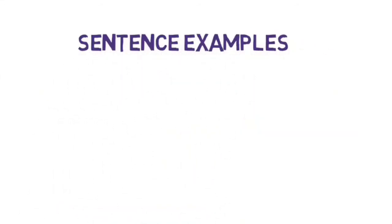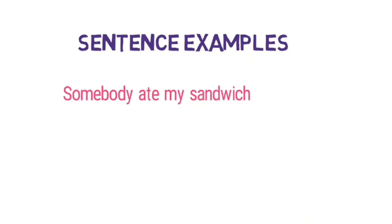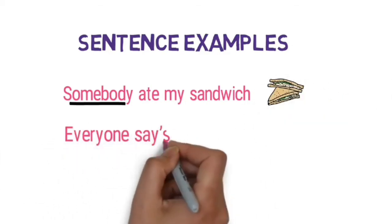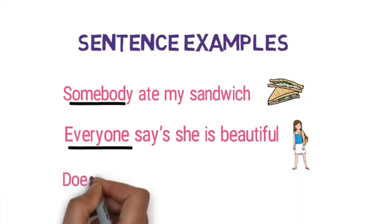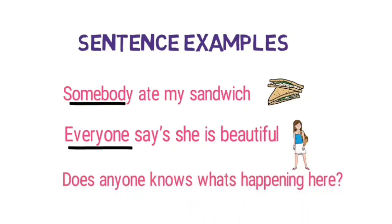Let's look at some sentence examples. Somebody ate my sandwich. Here, 'somebody' is an indefinite pronoun because we do not know who exactly has eaten the sandwich. Or: Everyone says she's beautiful — 'everyone' here is an indefinite pronoun and we address generally to everybody. Does anyone know what's happening here? We address an uncertain person, so 'anyone' is an indefinite pronoun. Remember all the types.